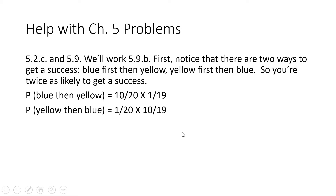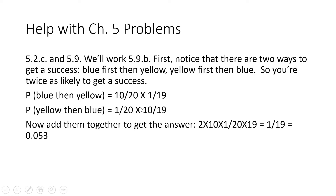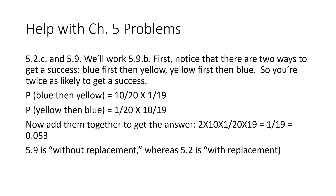For getting yellow first and then blue, it's almost the same thing but with yellow coming out first: one out of 20, and then blue coming out second — nine out of 19. You're kind of twice as likely to get a success, so we add these two things together. In the numerator this is 10 times 1 divided by 20 times 19, plus 1 times 10 divided by 20 times 19, which simplifies to 1 over 19, giving the answer rounded to 3 decimals.